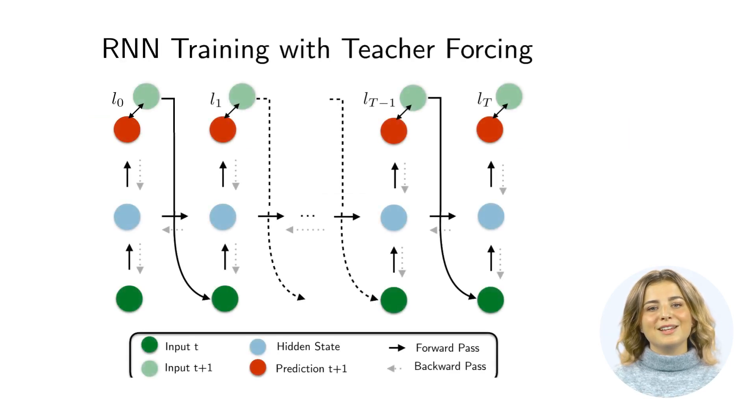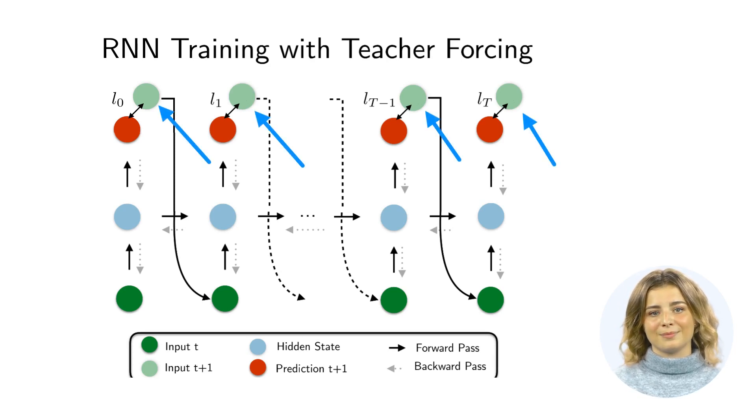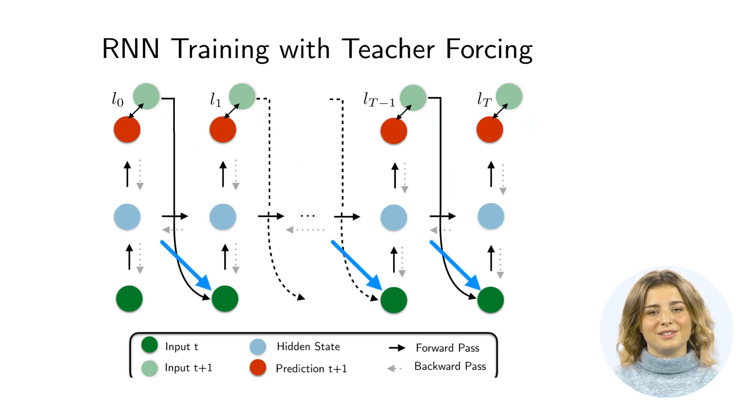Now, this sounds straightforward, but the magic of this model lies in how it's trained. The entire encoder-decoder model is trained end-to-end using a method called teacher forcing. Teacher forcing is a very effective technique. During training, the decoder is given the correct output token from the previous time step as input. Here you can see that the correct output token is passed on as new input to the next time step. Teacher forcing allows the model to learn more effectively from its mistakes.